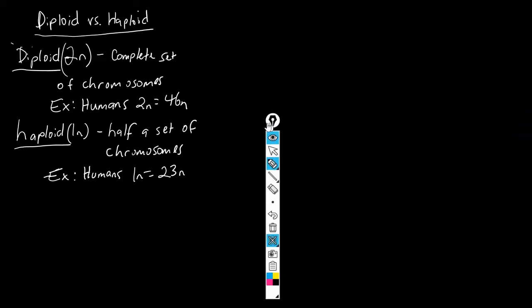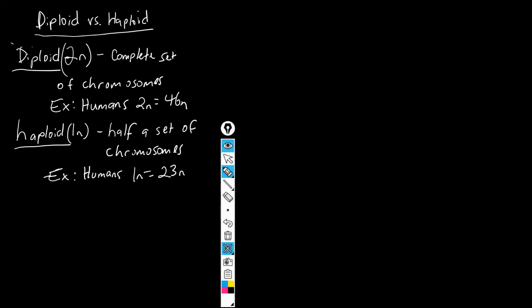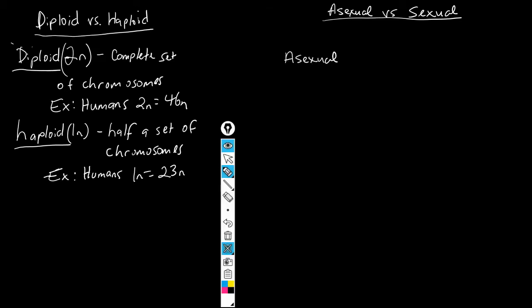Understanding that terminology is going to help you understand the difference between sexual and asexual reproduction, and it will also be very beneficial when we get to our genetics unit. On the other side of the screen, write down 'asexual versus sexual reproduction.' We're going to make a T-chart with asexual on one side and sexual on the other.